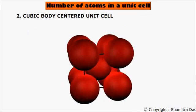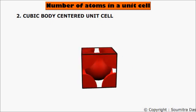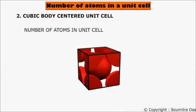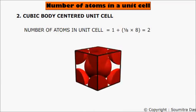Case 2: Cubic body-centered unit cell. Here, the center atom is inside the unit cell and its full volume is contributed to the unit cell. The eight corner atoms contribute one eighth of their volume as before. Therefore, the number of atoms per unit cell equals one plus one eighth multiplied by eight, which is equal to two atoms per unit cell.